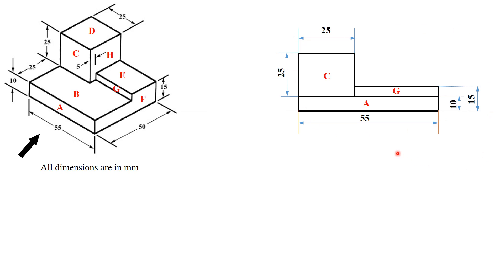After completing the front view, project all available edges downward onto the next view — the top view. This is the area where you draw the top view. Looking from above, surfaces B, D, and E will be visible.